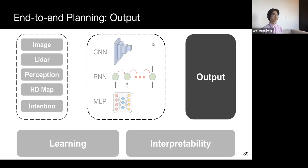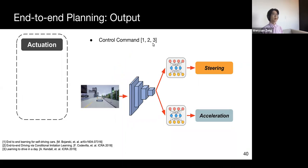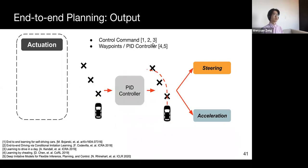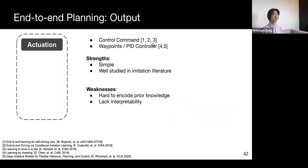Now, let's take a look at different output representations. The most straightforward way is called actuation. For example, the model can directly output steering and acceleration values. An alternative approach, which attracts more interest these days, is to first output a set of waypoints representing the future positions of the ego car. And then, we can use a PID controller to smooth the waypoints and generate a dynamically feasible trajectory. These waypoints representation can be easily visualized and help us gain insights to improve the model. Both of these representations are pretty simple but well studied in imitation learning literature. However, it's hard for us to encode prior knowledge to the model, such as we should drive along lanes and without collision.